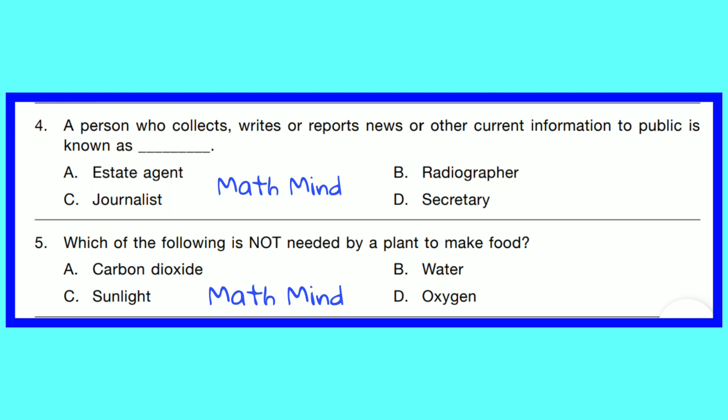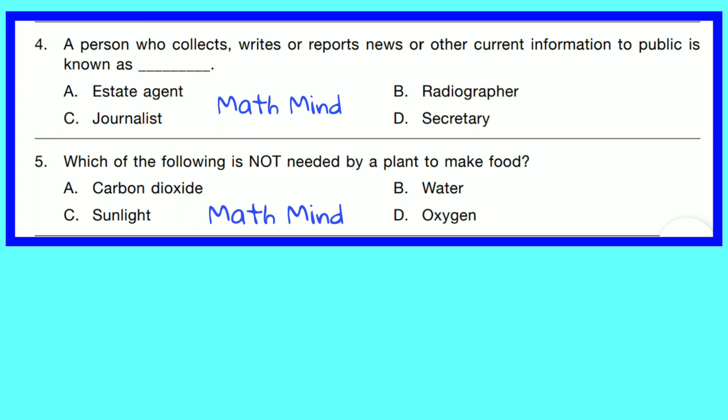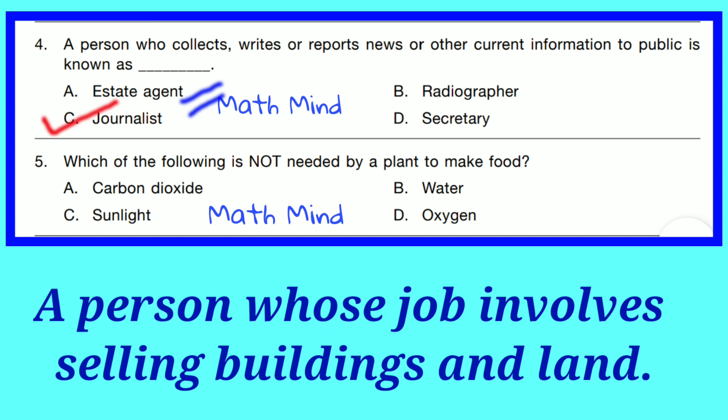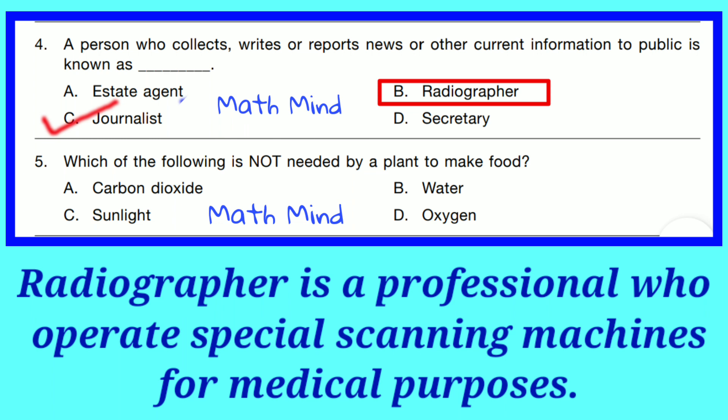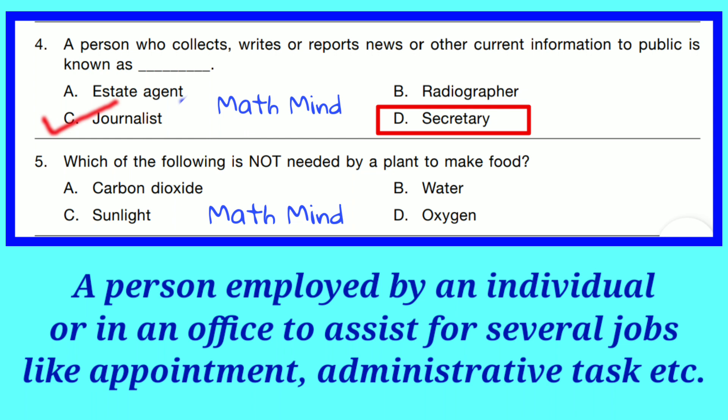Question No. 4. A person who collects, writes and reports news or other current information to the public is known as a Journalist. Correct option is C. Option A, Estate Agent: a person whose job involves selling buildings and lands. Option B, Radiographer: a professional who operates a scanning machine for medical purposes. Option D, Secretary: a person employed to assist with appointments and administrative tasks.